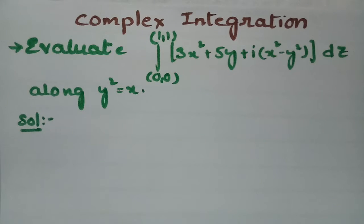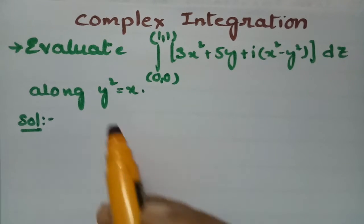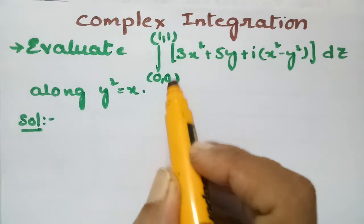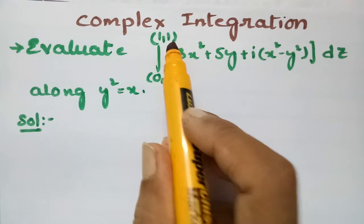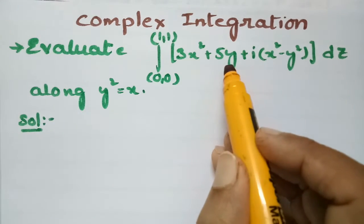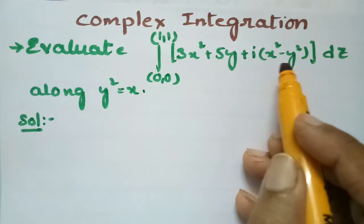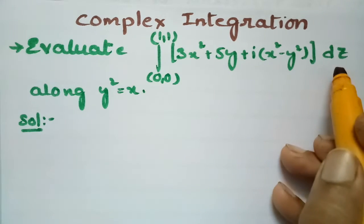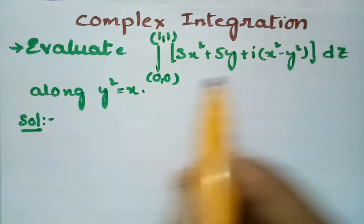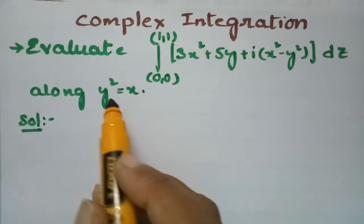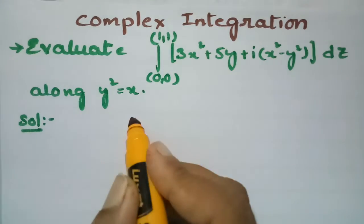Today I am going to give the solution for the most important problem from complex integration. I am going to evaluate the integral from (0,0) to (1,1) of 3x² + 5y + i times (x² - y²) dz, along the curve y² = x.